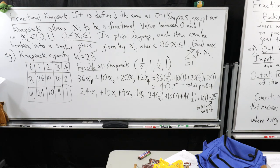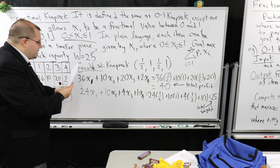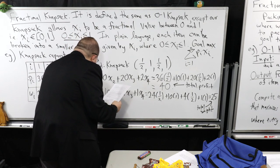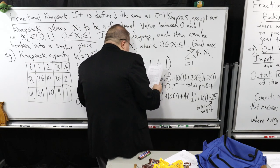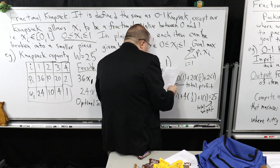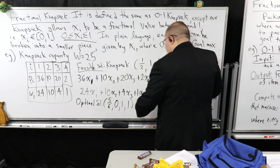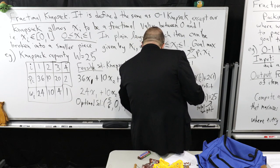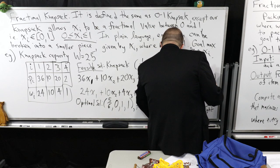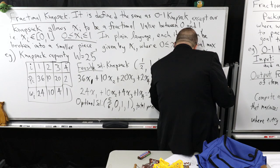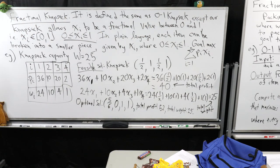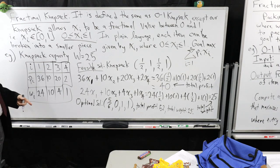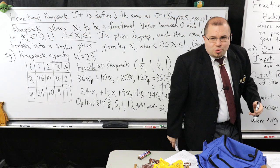Here's an example of an optimal solution: you'd use 5/6 for item 1, none of item 2, all of item 3, and all of item 4. The total profit of this one is going to end up being 52, and its total weight is also going to be 25. You can see that we could do much better than our feasible solution. A feasible solution is just some selection of the items such that I respect the knapsack capacity - the total weight does not exceed W.